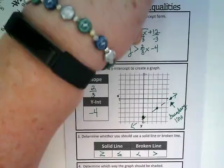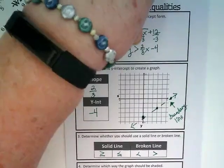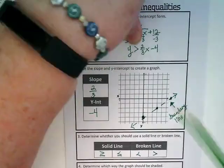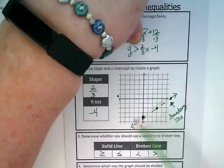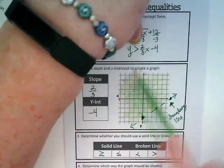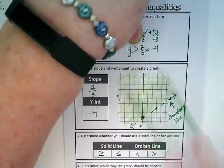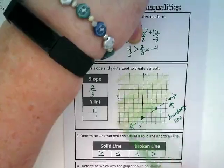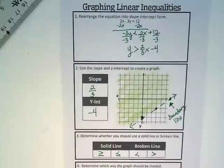It's greater than. So we're shading above. So take your colored pencil and just shade this area above where the boundary line is. Because we're showing where all of the possible answers are.